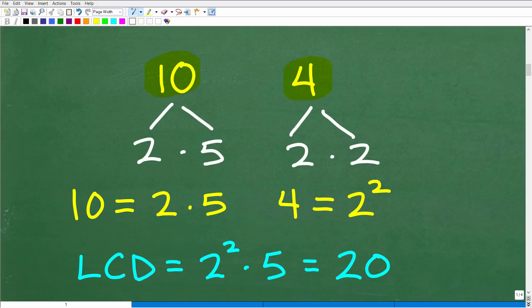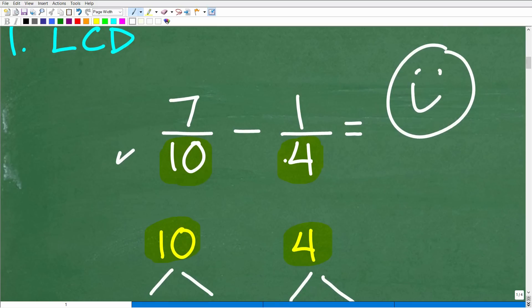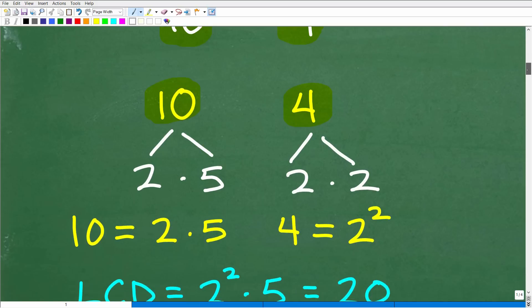Let's talk about how to find the LCD. What you want to do is take these numbers - these are our denominators, 10 and 4 - and you want to prime factor them.